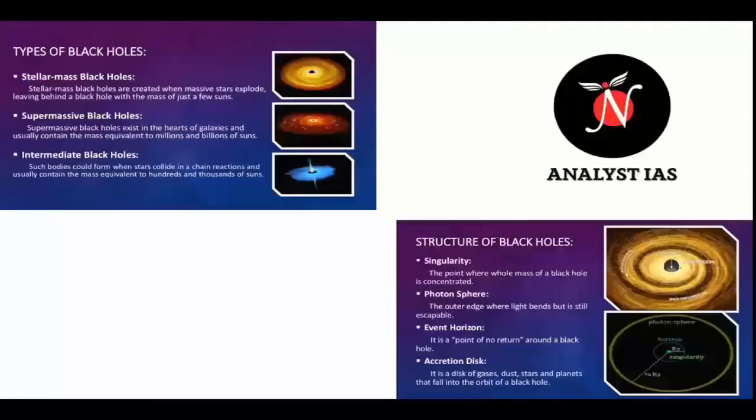Now we will understand what a black hole is. A black hole is a place in space where gravity pulls so much that even light cannot escape. The gravity is so strong because matter has been squeezed into a tiny space, and this can happen when a star is dying. As no light can get out, black holes are invisible, but space telescopes with special tools can help find them.